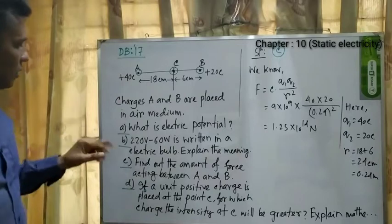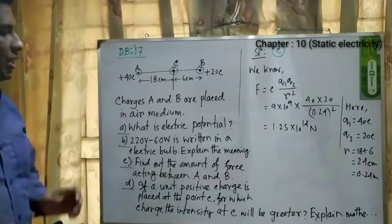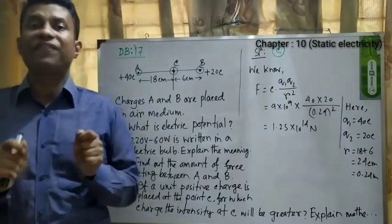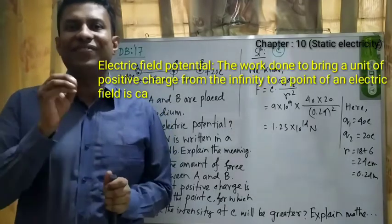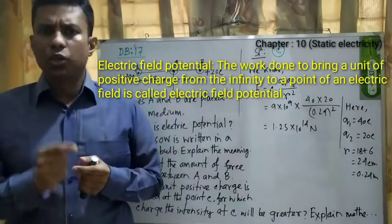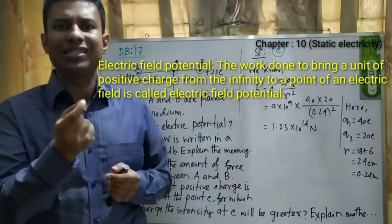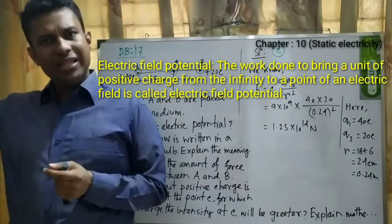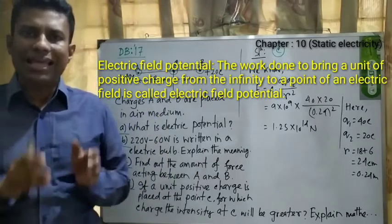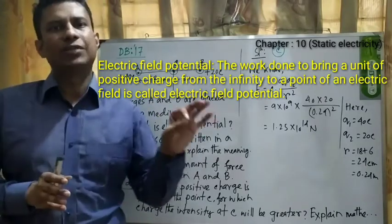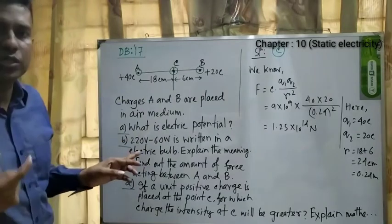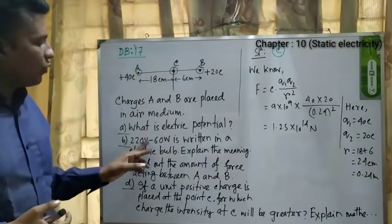The first question: what is electric potential? Electric potential means electric field potential — the work done to bring a unit positive charge from infinity to a point in an electric field is called the electric field potential of that point.